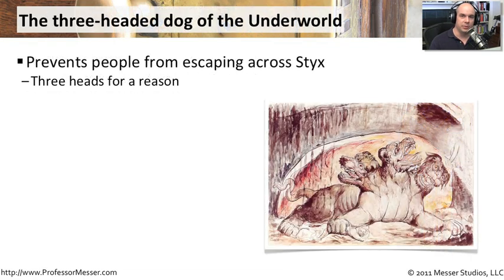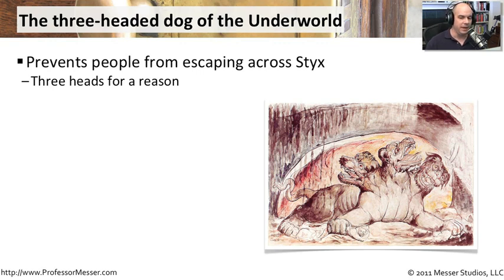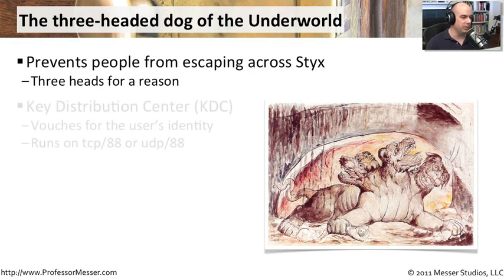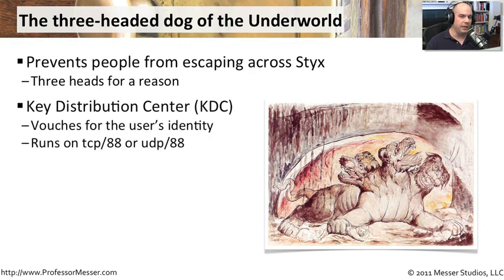Kerberos, or Cerberus, is a mythological creature — the three-headed dog of the underworld. Its job was to keep people from escaping across the River Styx. There's a reason we call this Kerberos, and that's because there are three components to it.